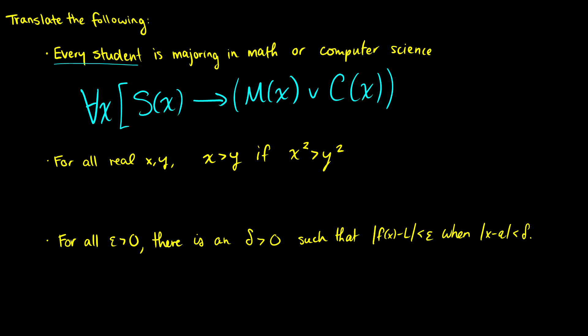So we have: for all x, S(x) → M(x) ∨ C(x). For all x, if x is a student, then x is a math major or x is a computer science major.